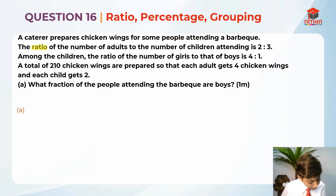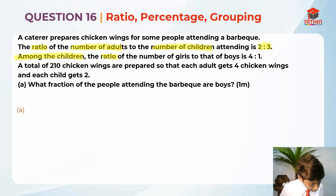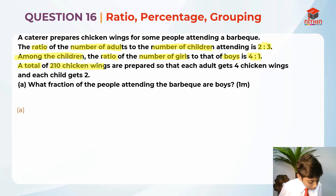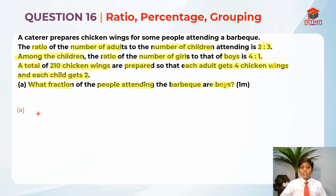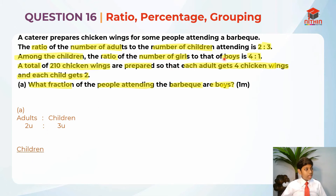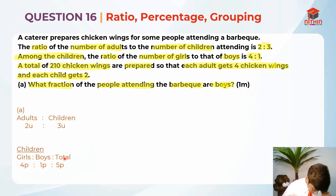The ratio of the number of adults to the number of children is 2 is to 3. Among the children, the ratio of the number of girls to that of the boys is 4 is to 1. So girls is to boys is to total is 4 parts is to 1 part is to 5 parts. The total is 5 parts. The children over here is the total — it's the same.